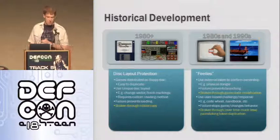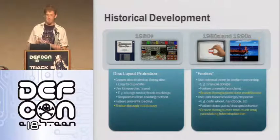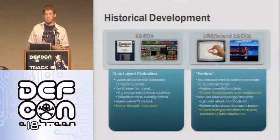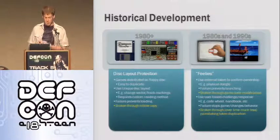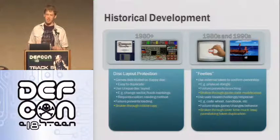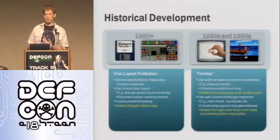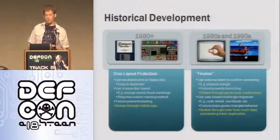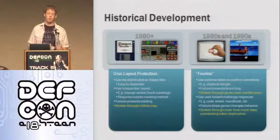First, the historical development of copy protection. One of the very first things that happened was floppies, which were the big distribution media in the 1980s. The problem is floppies at that point were relatively cheap — cheaper than actually buying a game. So the very simple thing that happened was disk layout protection, meaning you have a very unique disk layout that your normal operating system copy routines don't understand, but the application and game itself does. You're basically breaking the standard to some extent. This wasn't a big hurdle, and we'll see that it has been done in the same way later on.